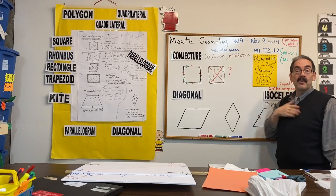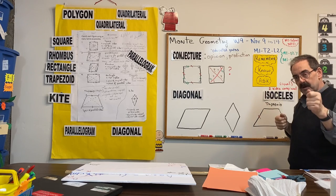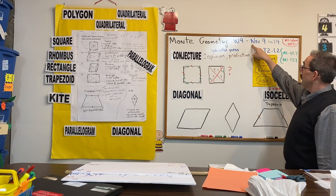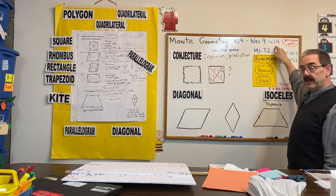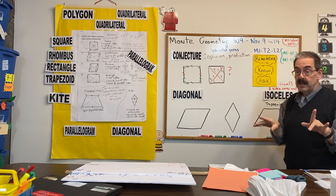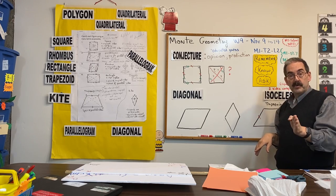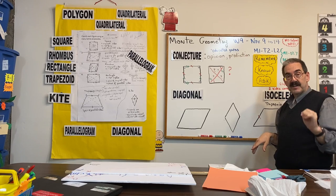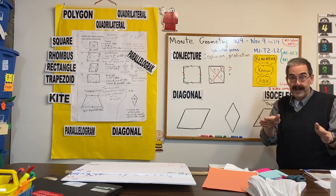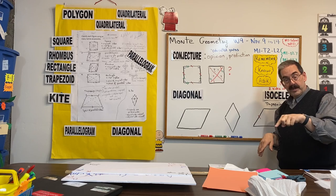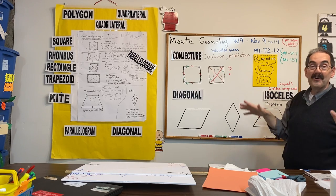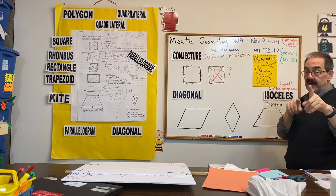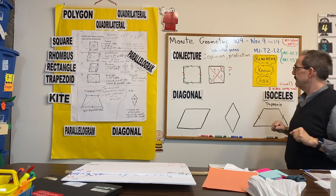Hey, everybody. Welcome back. Monty here. Shadle Park Geometry. We are on week nine, November 9th to the 14th. No school Wednesday. So one, two, three on Monday. Four, five, six on Tuesday. Skip Wednesday. One, two, three on Thursday. Four, five, six on Friday. And we'll call it a week. Don't forget, kind of a strange week this time.